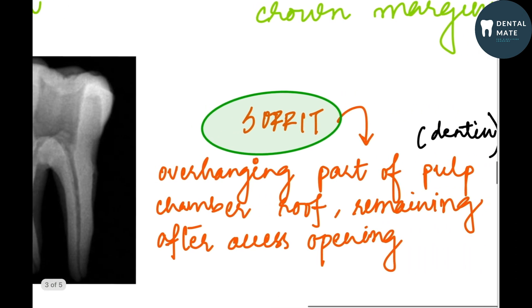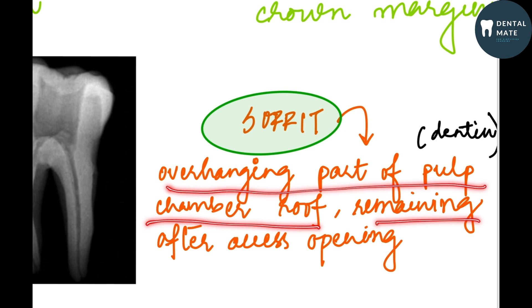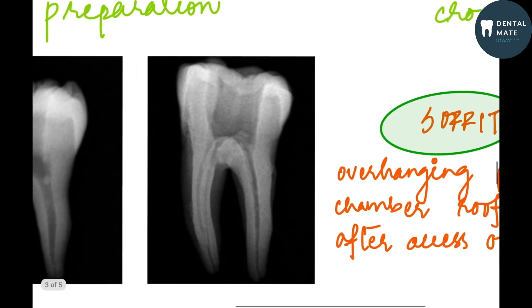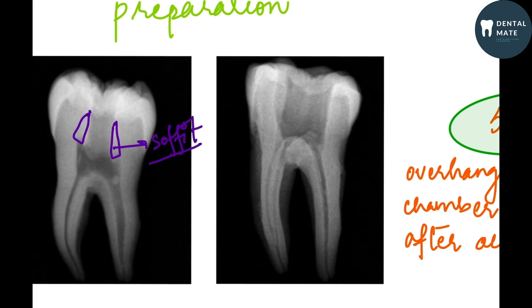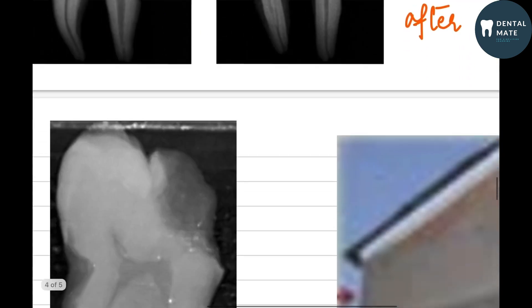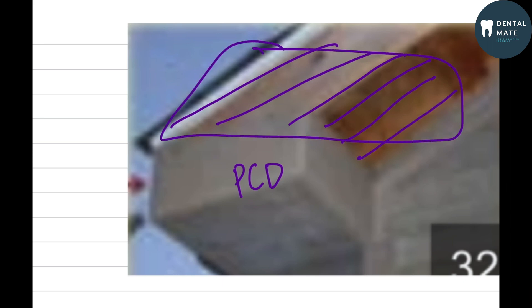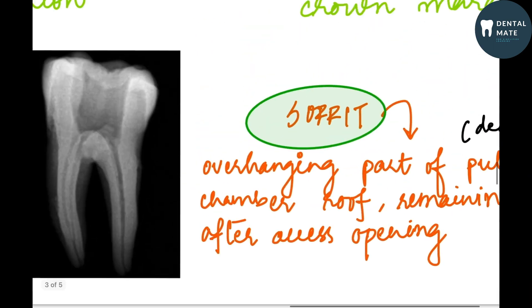While preserving this area, we are trying to preserve the soffit. What is soffit? It is the overhanging part of the pulp chamber roof which remains after access opening. In a traditional access opening, you have straight-line access to the orifices. In a conservative access opening, they have not taken a straight-line access — they have preserved this overhang area. This is the soffit — the dentine area which is preserving the pericervical dentine. This soffit is the overhang of the pulp chamber roof preserving the pericervical dentine.